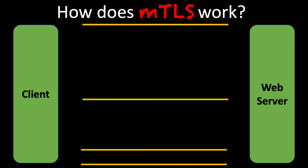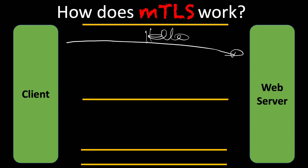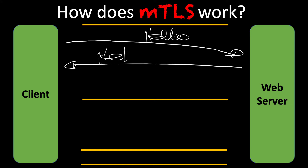Mutual really means something is happening on both sides. If we look at a traditional TLS conversation, we have initially the client sending that hello packet. Then the web server responds with the hello plus its certificate. At this stage, what we're really doing is authenticating that web server using the web server's certificate, and on that certificate is essentially the public key.